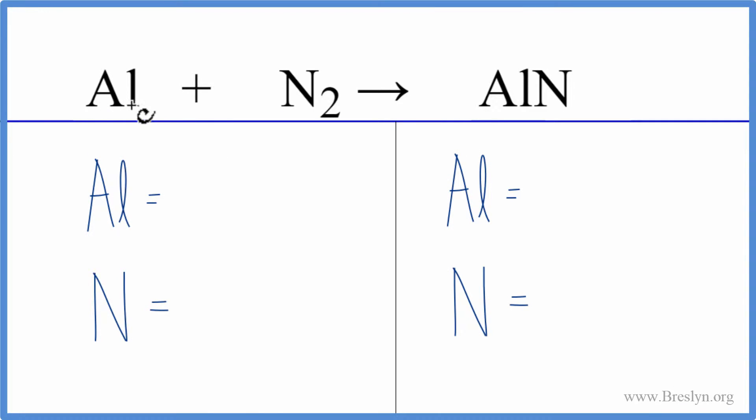To balance this combination reaction where we have aluminum plus nitrogen forming aluminum nitride, let's count the atoms up on both sides of the equation.